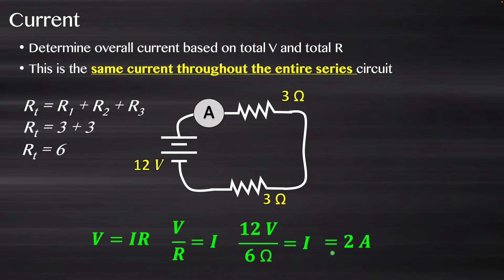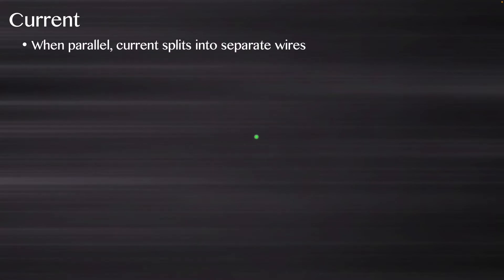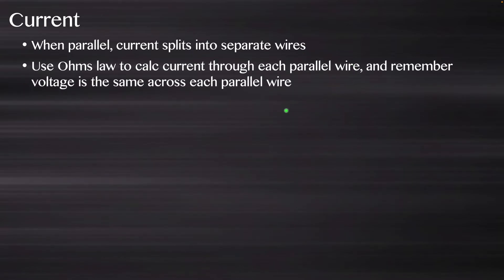That 2-amp current would be the same whether measured before or after any resistor, because the current is the same throughout the entire series circuit — 2 amps everywhere. When it's parallel, the current is going to split into separate wires. If we have two parallel wires, the current divides into parts and the total amount is broken up.